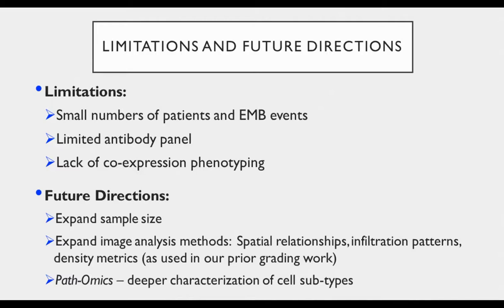Like most pilot work, this work has quite a few limitations. Obviously there is a small number of total patients and biopsy samples. The antibody panel is somewhat limited — a seven-marker multiplex panel is better than H&E, but it certainly isn't exhaustive in terms of all potential markers of interest for immunologic processes going on in allografts. We also had a lack of co-expression phenotyping at this deployment of QMIF — meaning we didn't try to figure out exactly what cells are expressing PD-L1: are these macrophages, Tregs, or myocytes? This information is going to be important, and co-expression phenotyping is a future direction for us.